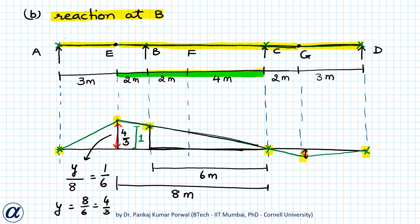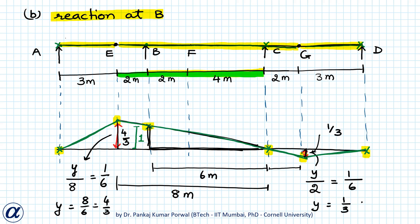Similarly, we can find the vertical displacement of G using similar triangles. The displacement at G is y/2 = 1/6, and because this displacement is in the downward direction it will have a negative sign. This is the influence line diagram for support reaction at B.